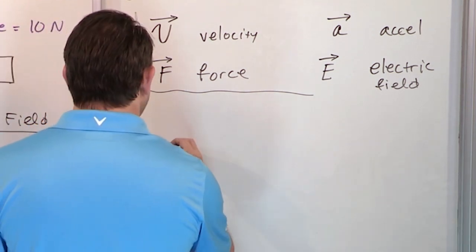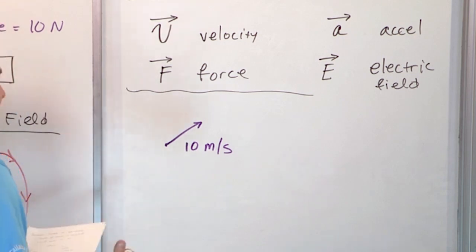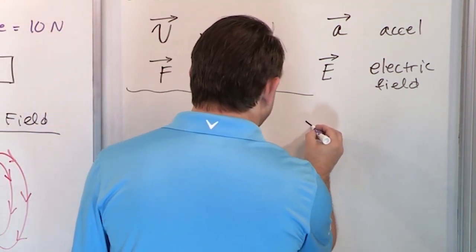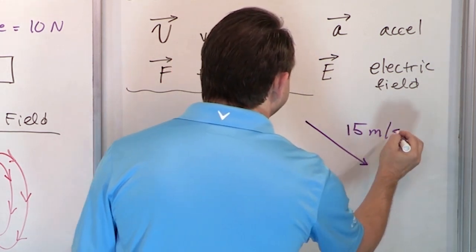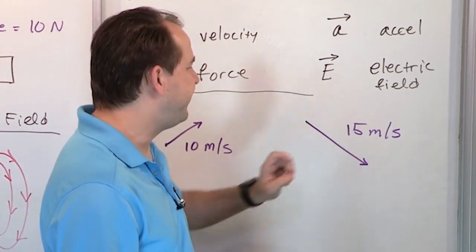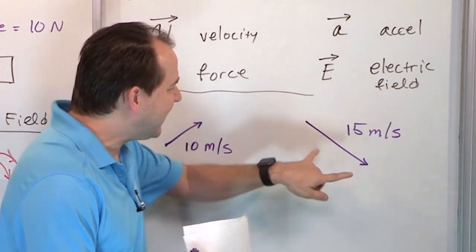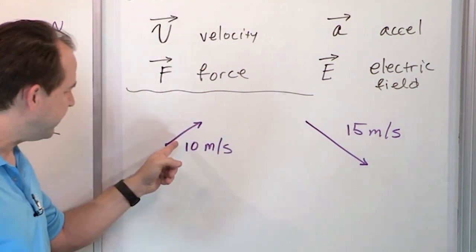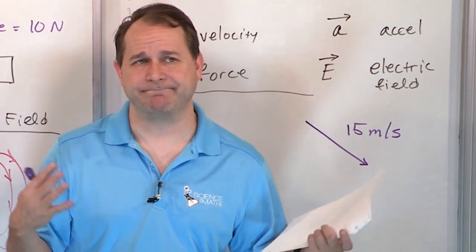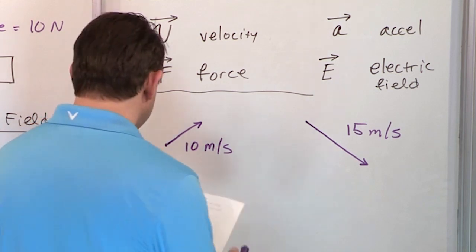Let's say I have a ball and I draw an arrow representing 10 meters per second. The arrow indicates the direction I'm throwing the ball, and the magnitude is the number. Now let me draw a different ball thrown downward at 15 meters per second. It's important to see that the lengths of these arrows are different — I'm representing this as 10 and this as 15. So with vectors, when you draw them as arrows, a stronger value means a longer arrow. The length of the arrow represents how big the number is.